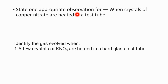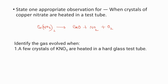Next question: state one appropriate observation when crystals of copper nitrate are heated in a test tube. We are not supposed to write the balanced chemical equation, just the observation. When copper nitrate is heated, you get copper oxide, nitrogen dioxide, and oxygen. You can write: a reddish brown gas will be evolved out of the test tube. Or: the blue colored copper nitrate will turn into a black residue of copper oxide. Either observation is acceptable — they are asking for only one.